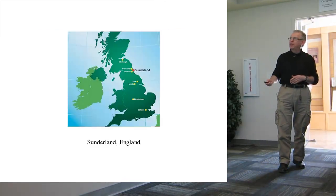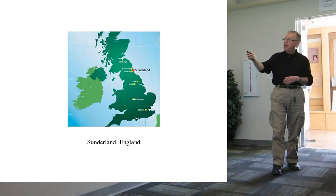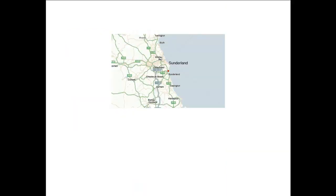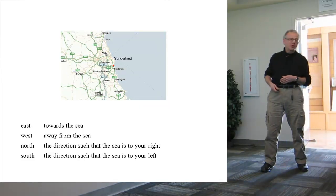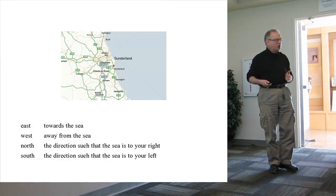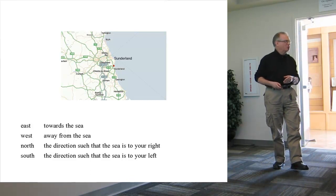Why? To answer that, I think you have to go back to my home area. This is my hometown, Sunderland, on the coast of the North Sea in England. Here you see a blown-up version of that same area. Notice the coast is very much a north-south flowing coast — the sea is in the east. Most of my childhood was spent within a couple of miles of the sea. What happened was that I developed an auxiliary model of the cardinal directions, where east meant towards the sea.